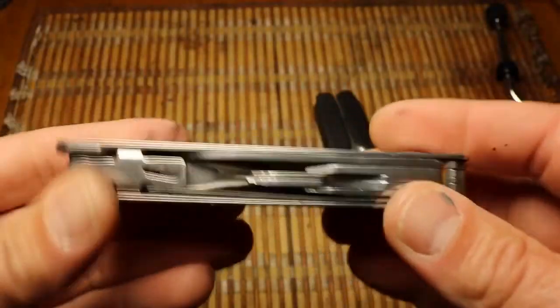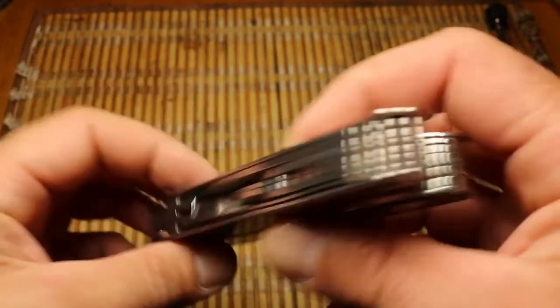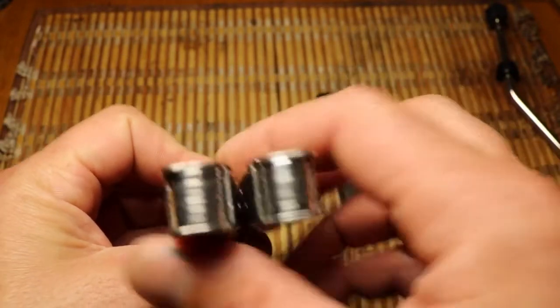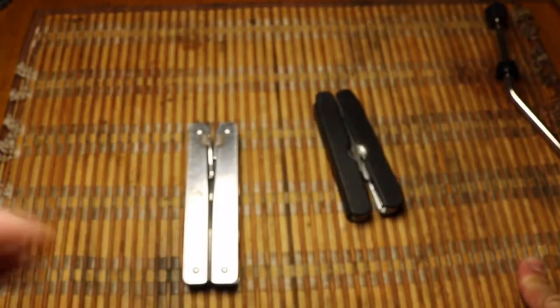Then you've got your scissors and the file which actually still works pretty well as a file. It's also a saw on this edge as you can see there. Everything works as it should, clipping and opening. When it closes, it's as it should be, straight and straight, no bends or twists or anything like that. So that's the Victorinox.